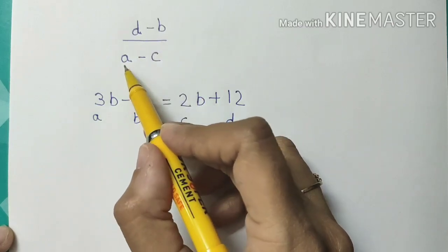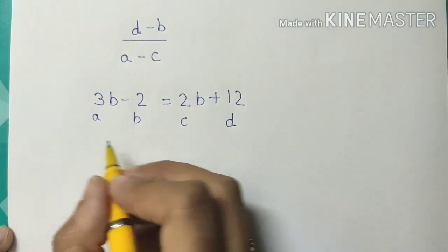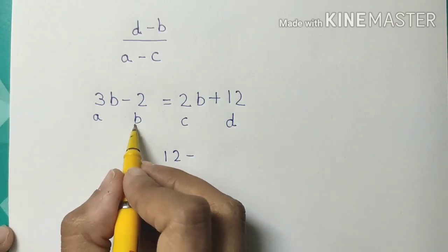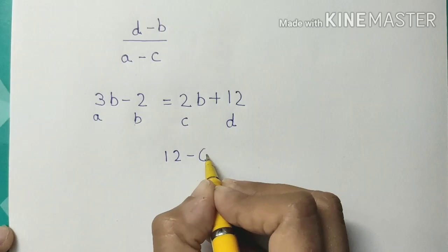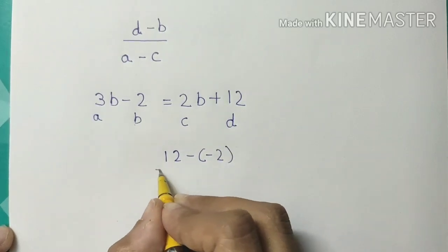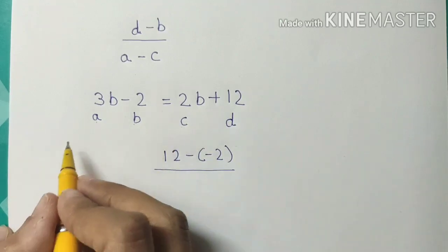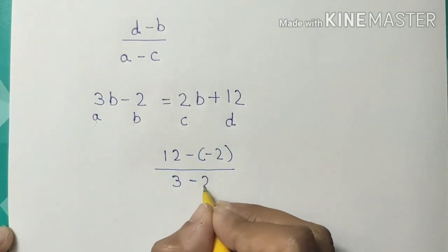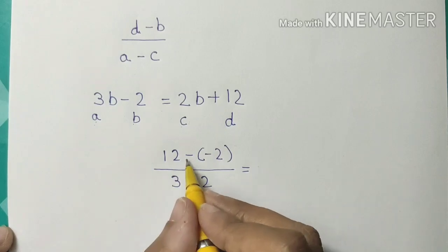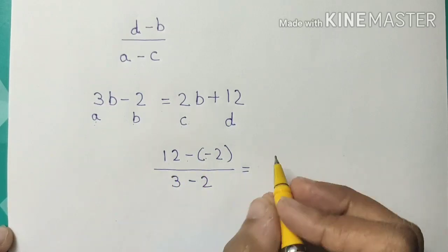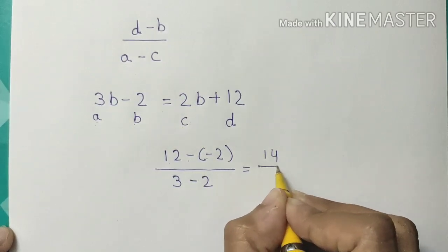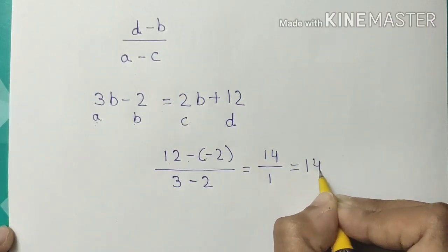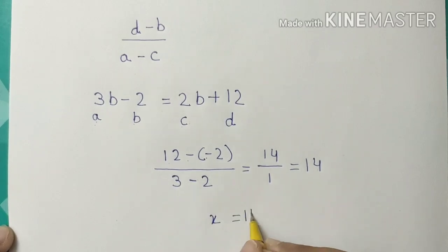D is 12. We put these values into the formula (D minus B) upon (A minus C). D is 12, minus B which is minus 2, upon A which is 3, minus C which is 2. So 12 minus (minus 2) is 14, upon 3 minus 2 is 1, which gives 14. So the value of x is 14.